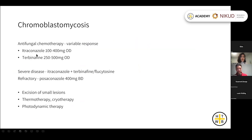For chromoblastomycosis, first-line treatment is again itraconazole, and terbinafine is often used. Response rates vary quite widely — from around 15% up to 85% — probably depending on the causative species. Other options include posaconazole, and surgical and physical therapies can also be helpful, especially as adjuncts.